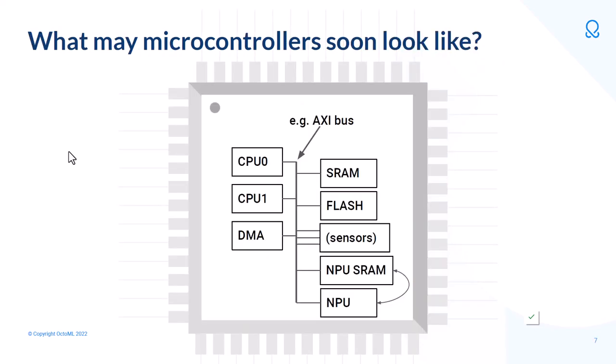But I want to look at what microcontrollers are starting to look like today and what they're going to look like coming down the line. Microcontrollers are quickly becoming much more complicated. There may be another CPU on board — it might have the same architecture as the original CPU, or we might have a big-little arrangement where one CPU is more powerful but a smaller CPU is lower power.